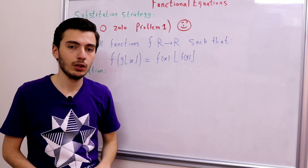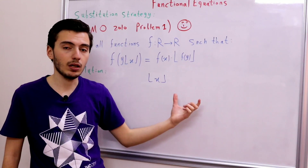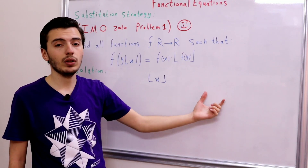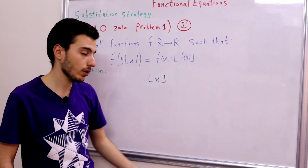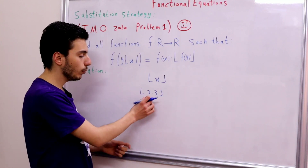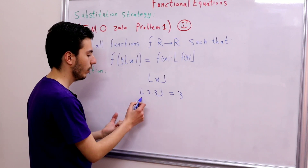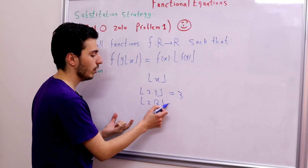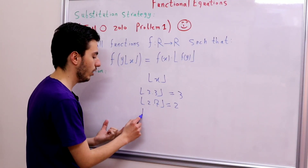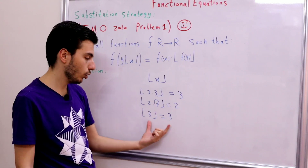So what exactly is the floor function? The floor of x is simply the integer part of x — by definition it is the greatest integer less than or equal to x. For example, the floor of 3.3 is 3, the floor of 2.7 is 2, and the floor of 3 is 3 itself. Of course, the floor of an integer is that integer.